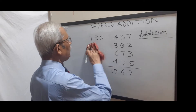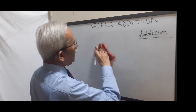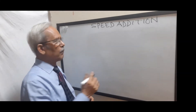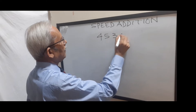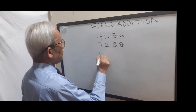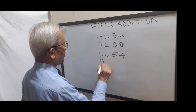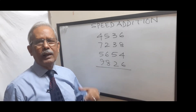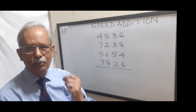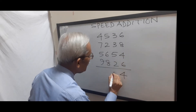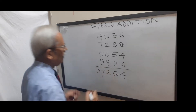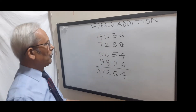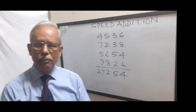Before we go further, let me give you some examples. Let us first do a 4 by 4 digit addition: 4536, 7238, 5654, 9826. This is a 4 by 4 addition. I'll count 1, 2, 3 and start. I've done it. Let me check it. Absolutely okay. That is the speed of my calculation — no formula or tricks, simply the speed of my processor.